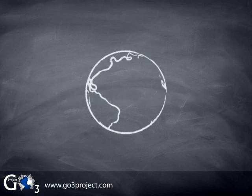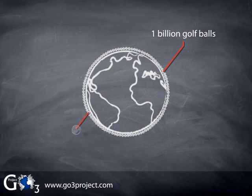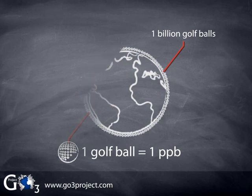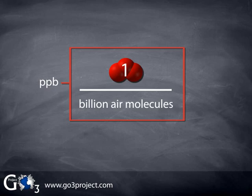To visualize what one PPB is, consider circling the earth with golf balls. It would take one billion golf balls to surround the earth at the equator. One golf ball then represents one part per billion, or one PPB, of the golf balls. Ozone monitors are capable of measuring ozone with a precision and accuracy of about one PPB. A level of one PPB of ozone means that there is one ozone molecule for every one billion air molecules. Since PPB is the fraction of air molecules that are ozone, to express ozone in PPB units, we need to know the concentration of air molecules.